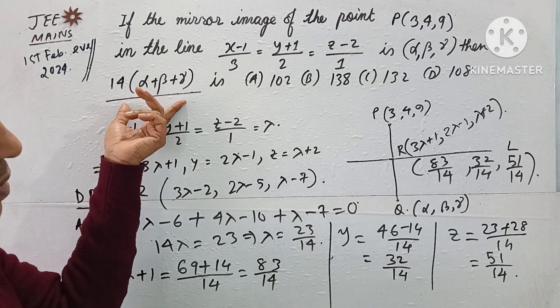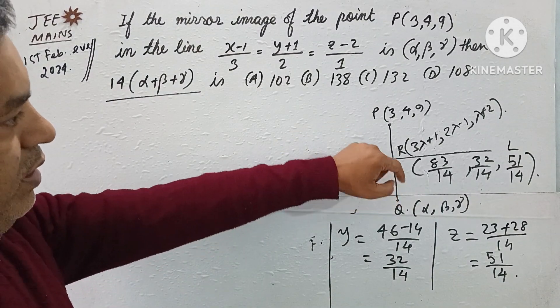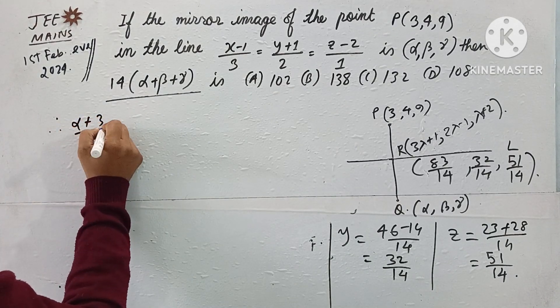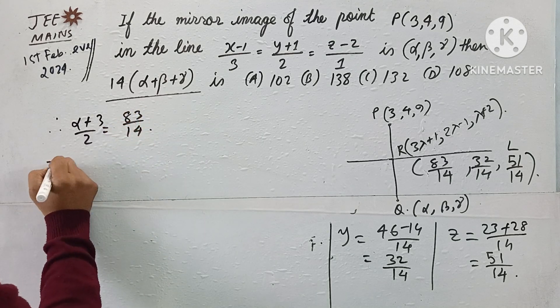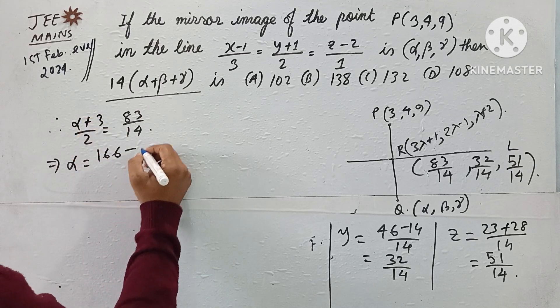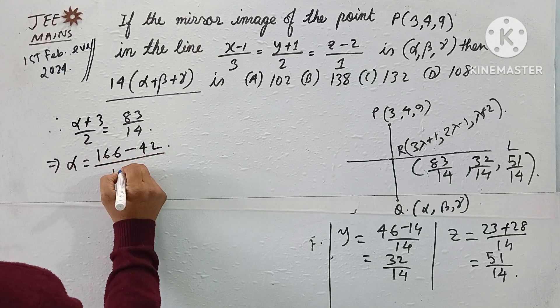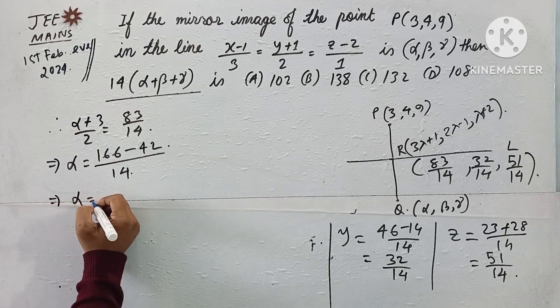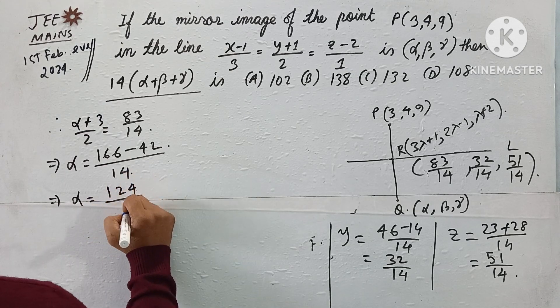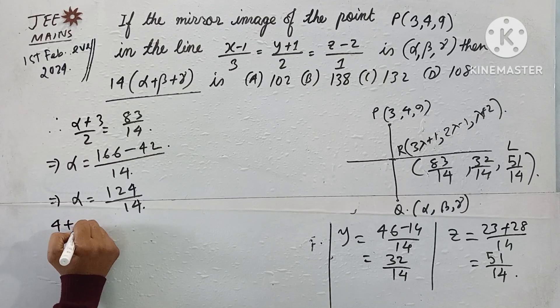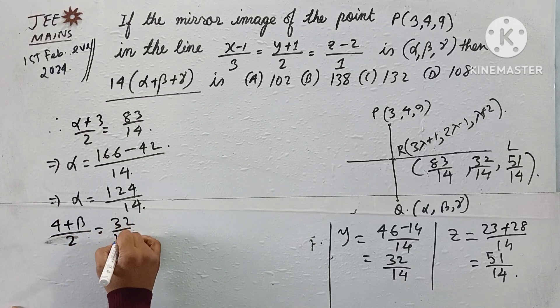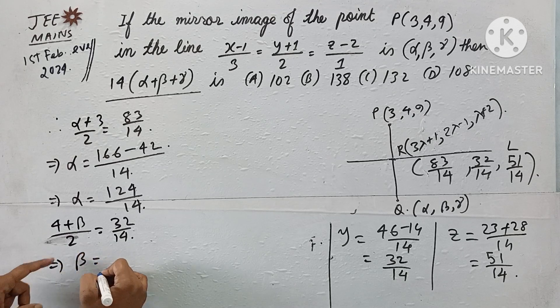After finding R's coordinates, we need α, β, γ. Therefore (α+3)/2 = 83/14, so α = 83/14 - 21/14 = 124/14. Similarly (4+β)/2 = 32/14, so β = 64/14 - 56/14 = 8/14.